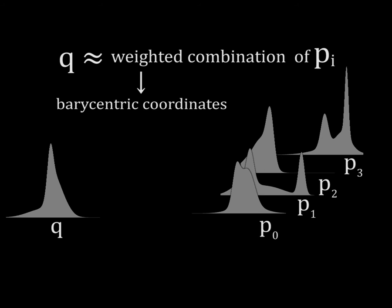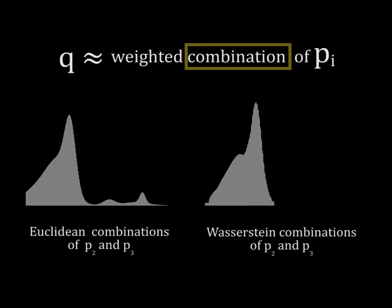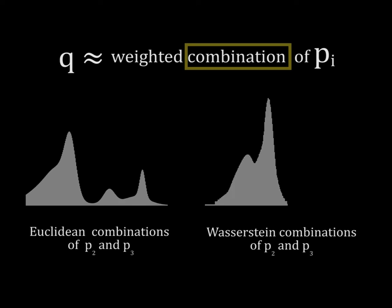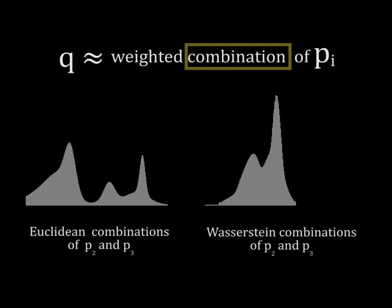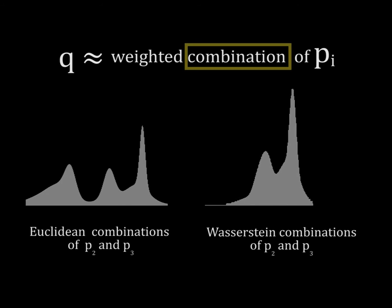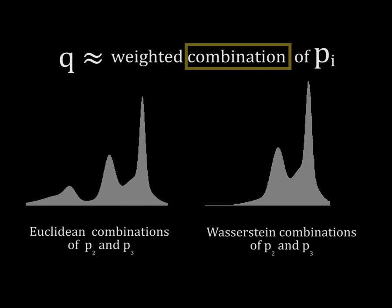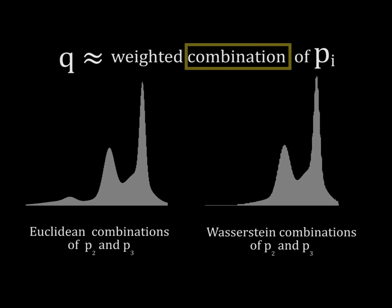For clarity, let's consider one-dimensional histograms. First, this work combines histograms using optimal transport theory. Contrary to Euclidean combinations shown on the left, optimal transport combinations move histograms instead of blending them, as shown on the right. This construction is called a Wasserstein barycenter.